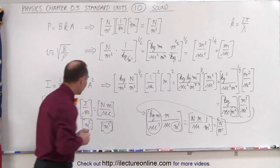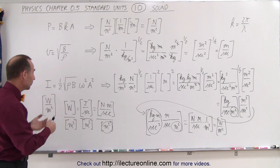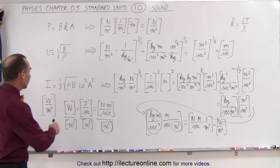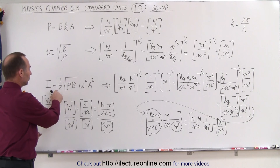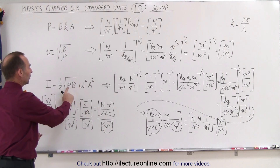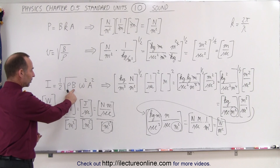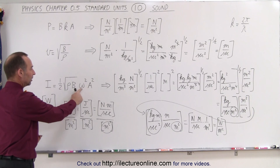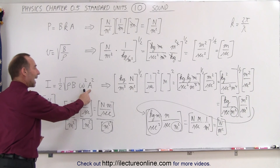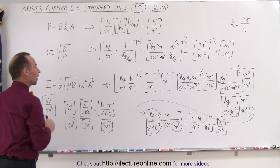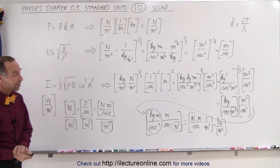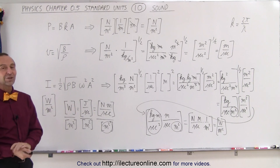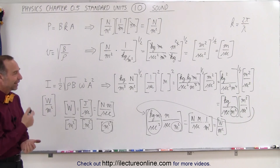So this equation does appear to be correct when we check the units. Intensity in watts per square meter equals one-half times the square root of the density of the air times the bulk modulus, times the angular frequency squared, times the amplitude of the oscillation squared. That was a little complicated, but you can see that eventually the units work out — and that's how it's done.